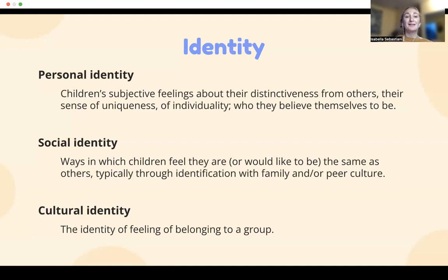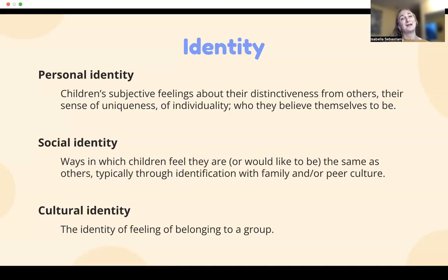The text places a big emphasis on social identity, which refers to ways in which children feel they are or would like to be the same as others, typically through identification with family and/or peer culture. Social identity begins with family and culture and can be cultivated in the classroom, especially through play. As children develop their identity, they're influenced by interactions and relationships with others. Friendship is of value to children as they help each other understand the world in which they live. Children with friends have better social skills and fewer adjustment problems, as friends provide social support and can protect against the difficulties of starting school, victimization, and bullying. Having friends is an important resource for developing identities.